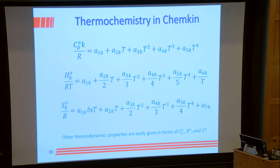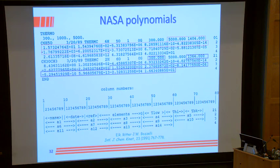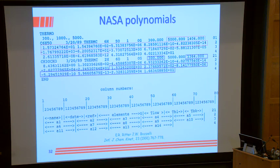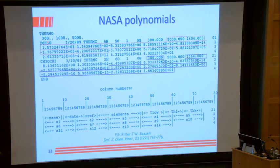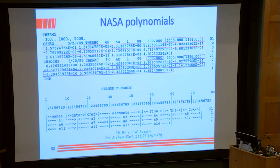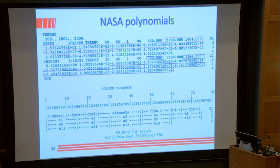Here we have the NASA polynomials for phenoxy radical (C₆H₅O) and dimethyl ether. Typically we have the molecule descriptor, the date generated, the number of atoms — six carbons, five hydrogens, one oxygen — and it's gas-phase thermochemistry. The low temperature range is 300 to 1,400 K and the high temperature range is 1,404 to 5,000 K.